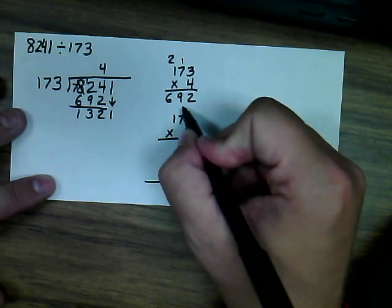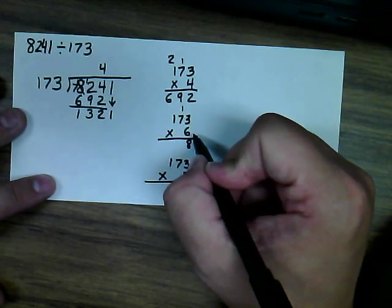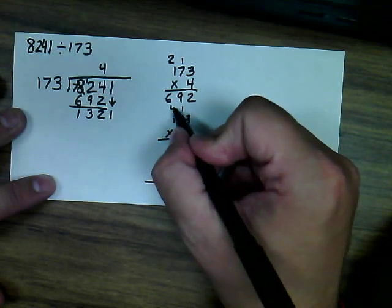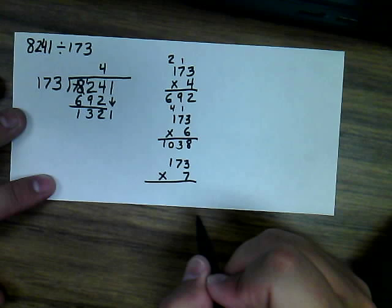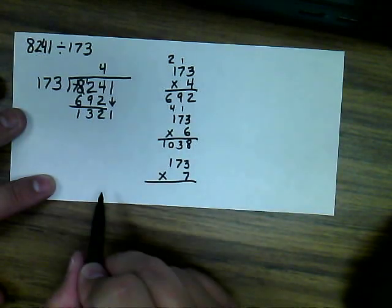3 times 6 is 18. 6 times 7 is 42, plus 1 is 43. 1 times 6 is 6, plus 4 is 10. And you can see we're a little bit on the low side there. Let's try this one.